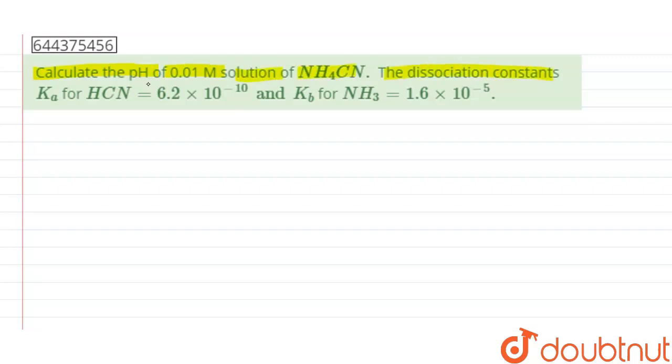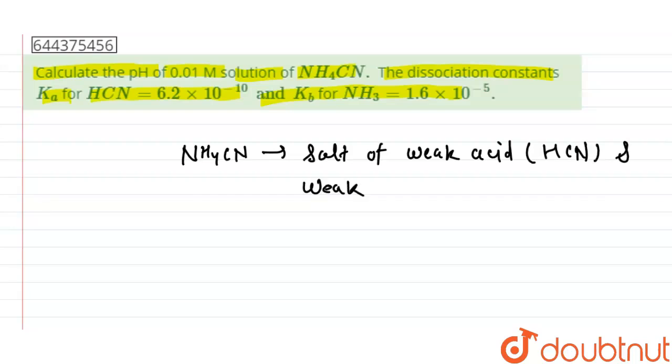The dissociation constant Ka for HCN and Kb for NH3 is given. Now, we know that NH4CN is the salt of weak acid, that is HCN, and weak base, that is NH3.